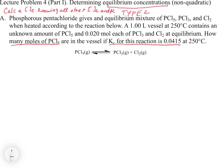That's the setup: the question asks for information at equilibrium for one of the reactants, and it gives you Kc with a value. So let's read the actual question. Phosphorus pentachloride gives an equilibrium mixture of PCl5, PCl3, and Cl2 when heated according to the reaction below.